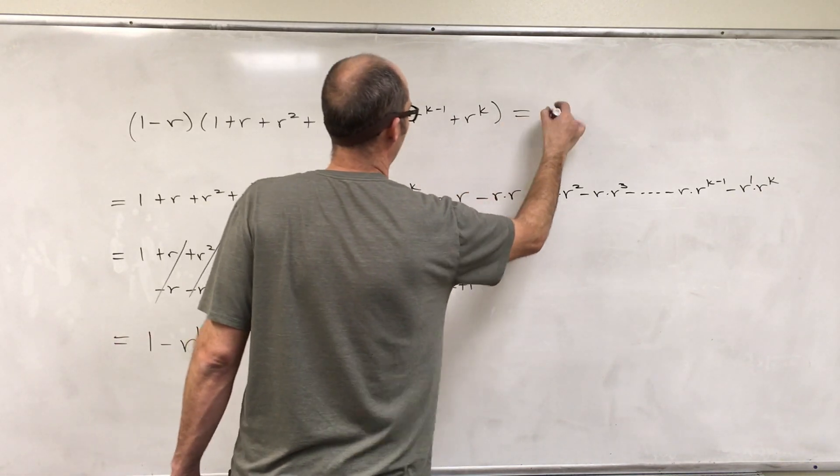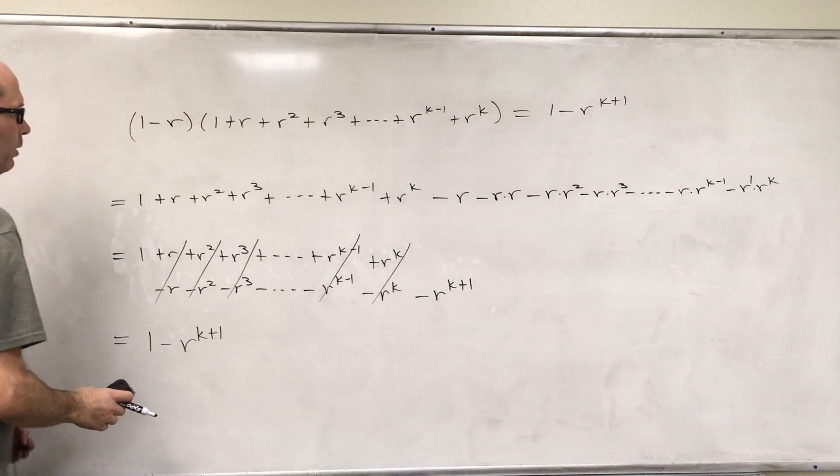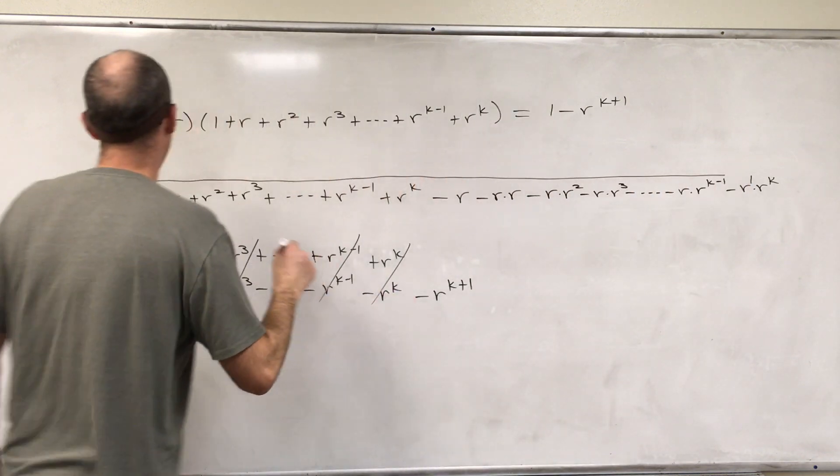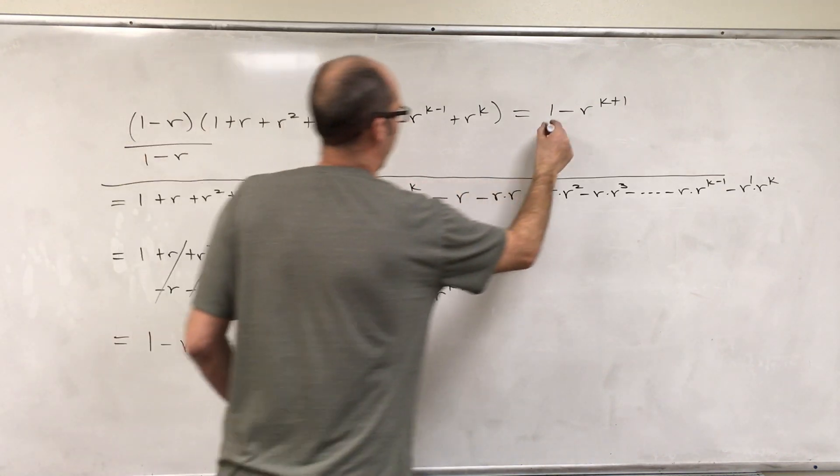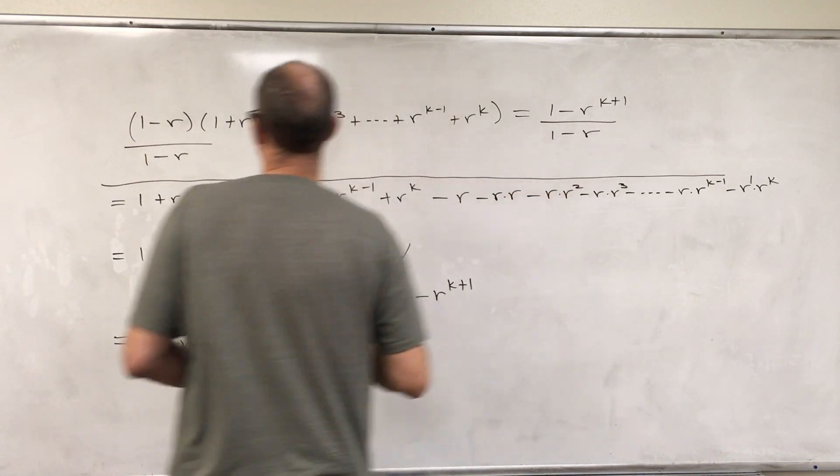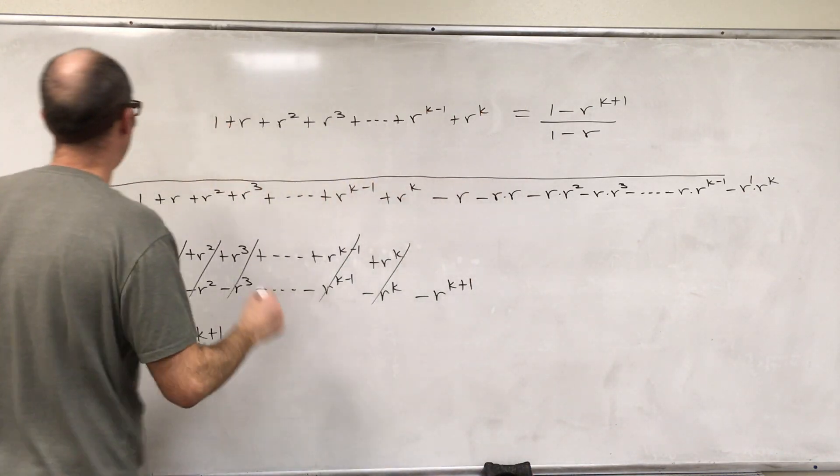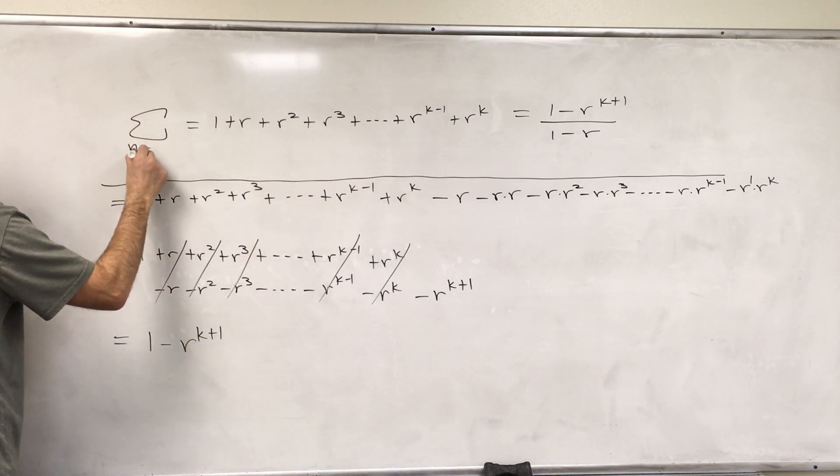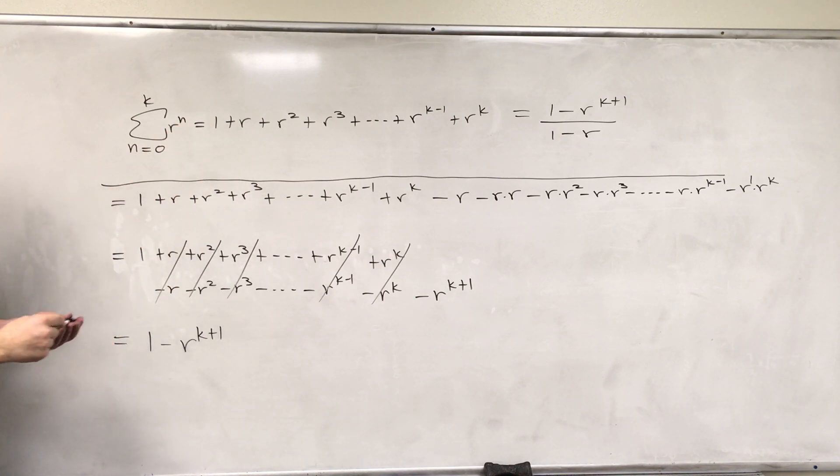Alright, so we found that this was equal to 1 minus R to the K plus 1. So if R is not equal to 1, we can divide both sides by 1 minus R, and we get the formula. So this is the sum from N equals 0 to K, R to the N.